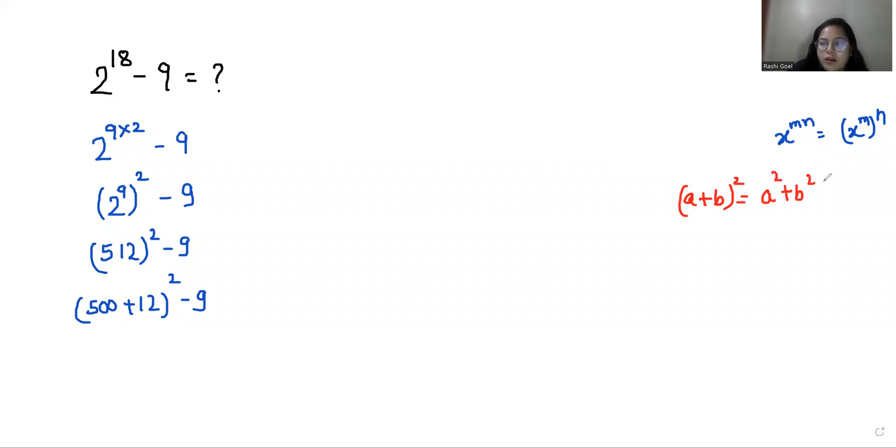Let's put the values: 500^2 + 12^2 + 2(500)(12) - 9. 500^2 is 250,000, plus 12^2 is 144, plus 2 times 500 is 1000 times 12 is 12,000, minus 9.